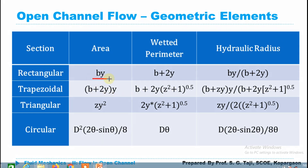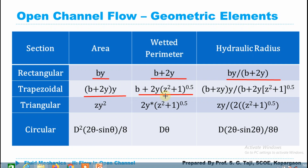For area computations of geometric elements: for a rectangular channel, area = B × y, wetted perimeter = B + 2y, and hydraulic radius = area divided by wetted perimeter. For a trapezoidal channel, area = (B + Zy) × y, and wetted perimeter = B + 2y × √(Z² + 1). For a triangular channel, area = Zy², wetted perimeter = 2y × √(Z² + 1). The hydraulic radius in each case is the ratio of the first two columns — area divided by wetted perimeter. We will derive these equations in a later session.